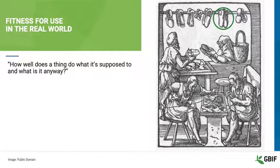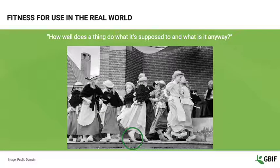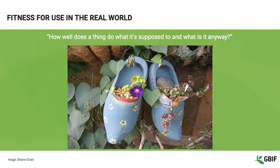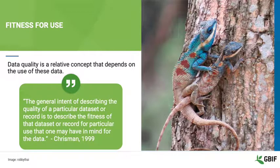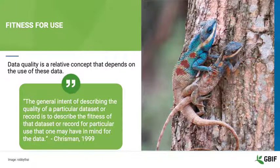Let's begin with an example of fitness for use. A shoemaker creates a pair of clogs for the purpose of covering a person's feet, just like those at the top of this image. When the shoemaker made these shoes, did he know that this girl would be using them for dancing? Maybe. Do you think that the same shoemaker knew that a gardener might one day use the shoes as plant pots? Maybe not. What we need to remember is that data is not inherently good or bad. Rather, it is the user of the data who gives data its value.